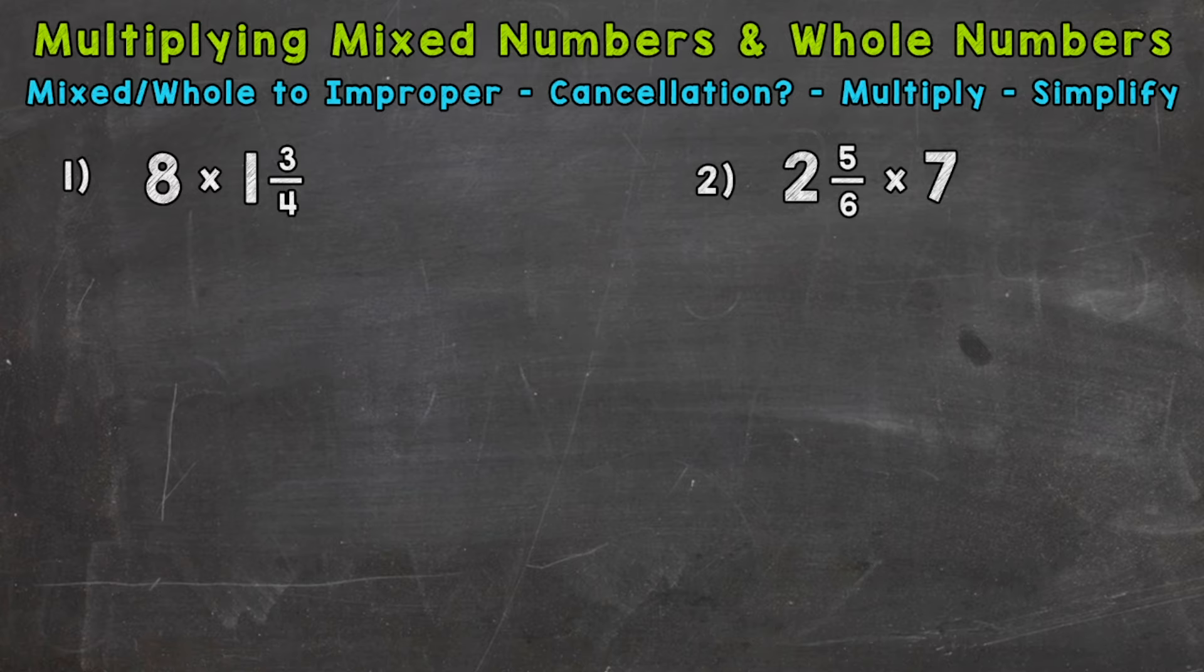So for the whole number 8, all we need to do for whole numbers is put them over 1 to change them to a fraction. So pretty simple for whole numbers. Now mixed numbers, we need to start at the bottom and work our way up. So we multiply and then add. We do 4 times 1 is 4, plus 3 is 7. We keep the denominator of 4 the same.